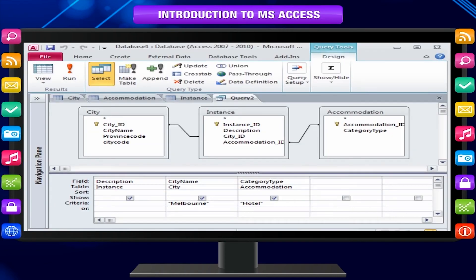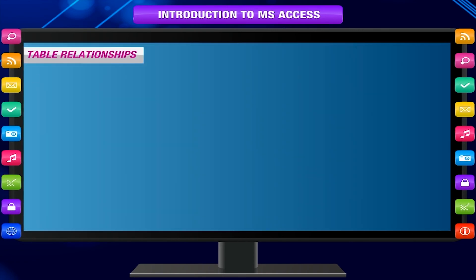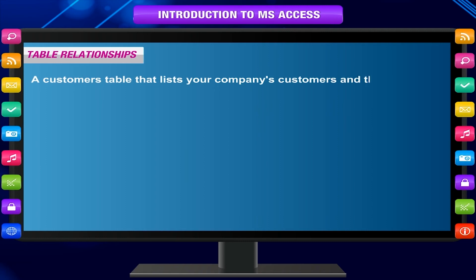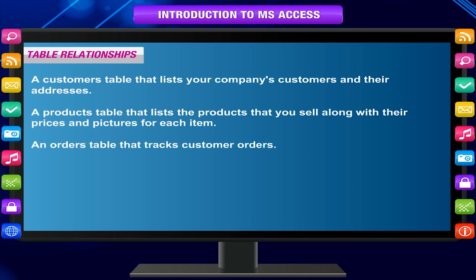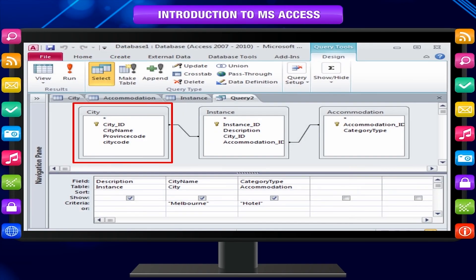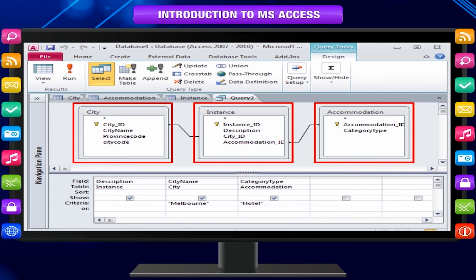Each table in a database stores data about a different subject, but these tables are usually related to each other. For example, a database for inventory might contain a customers table that lists your company's customers and their addresses, a products table that lists the products you sell along with their prices and pictures, and an orders table that tracks customer orders. Because you store data about different subjects in different tables, you need some way to relate the data stored in different places to combine it together. To connect the data stored in different tables, you create relationships.